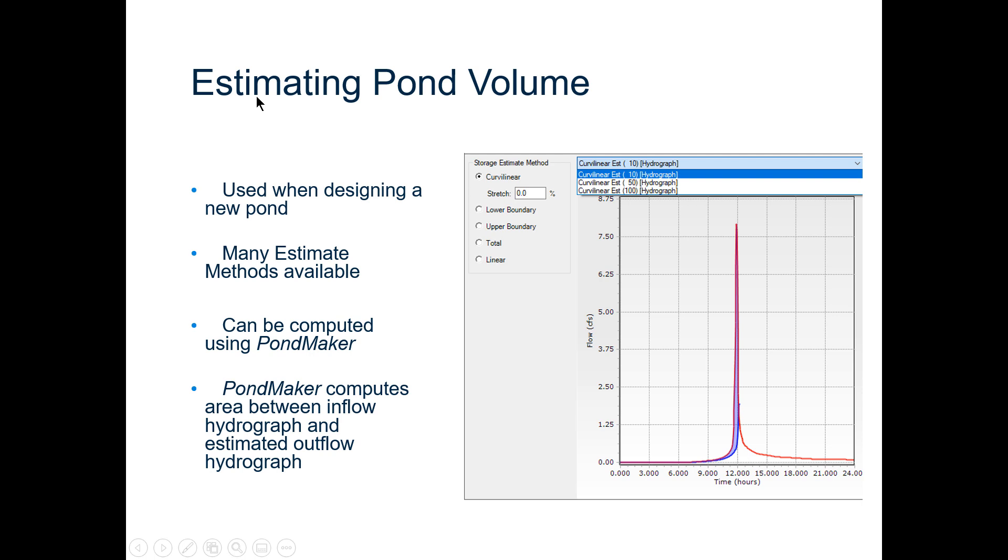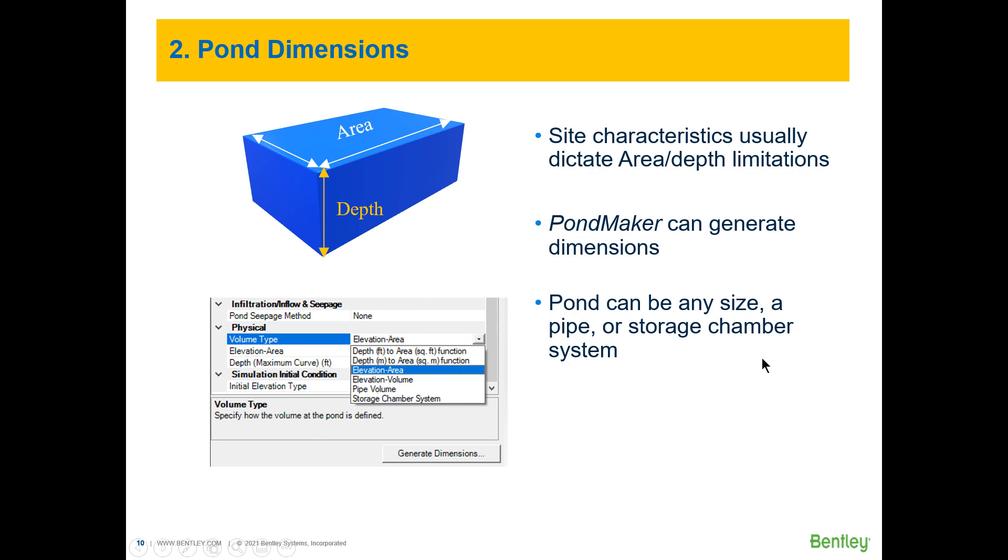So back to how do we estimate the pond volume. This image shows the method available in pond maker to estimate storage. The unknown part here is the blue outflow hydrograph so we allow you to utilize different methods some more conservative than others for each storm event so we can figure out the estimated volume to store for each storm event.